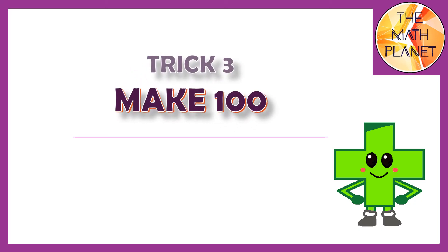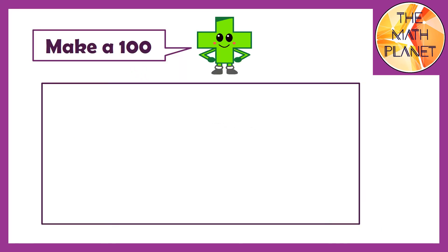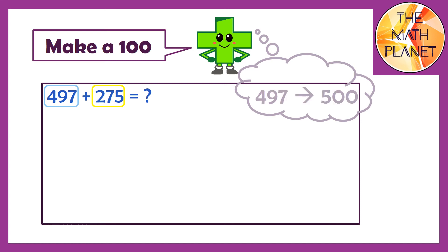The last trick for today is making 100. Making 100 can help you add faster. Let's see this example. If you have 497 plus 275, you can think that 497 is so close to 500. You only need 3 ones to make it 500.